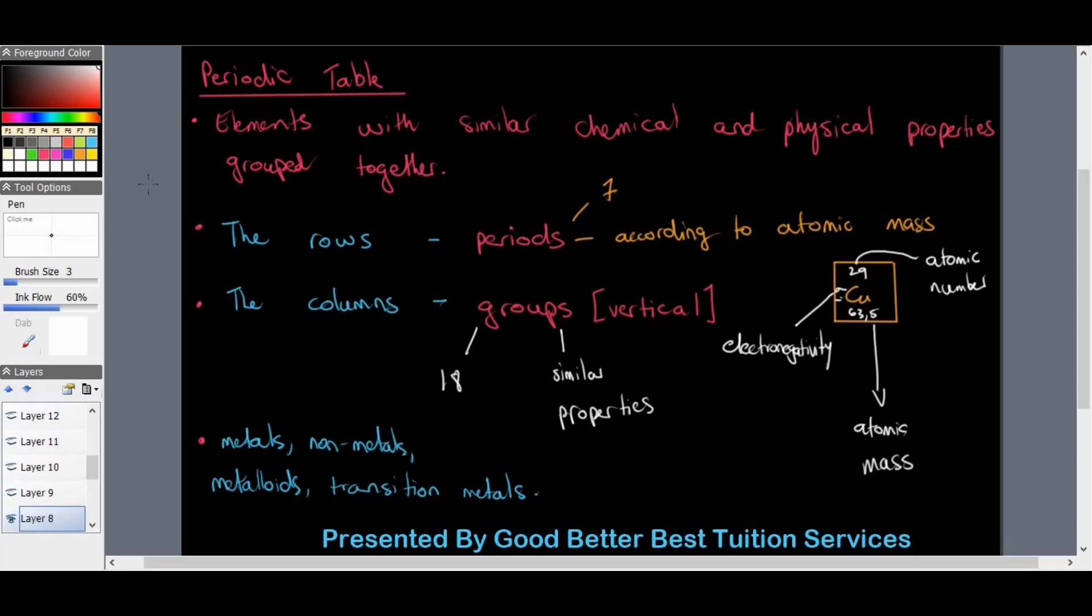Then we have the columns which are called groups. They are your vertical columns on the periodic table. We have 18 of them and elements are grouped in the columns or in the groups because they have similar properties.